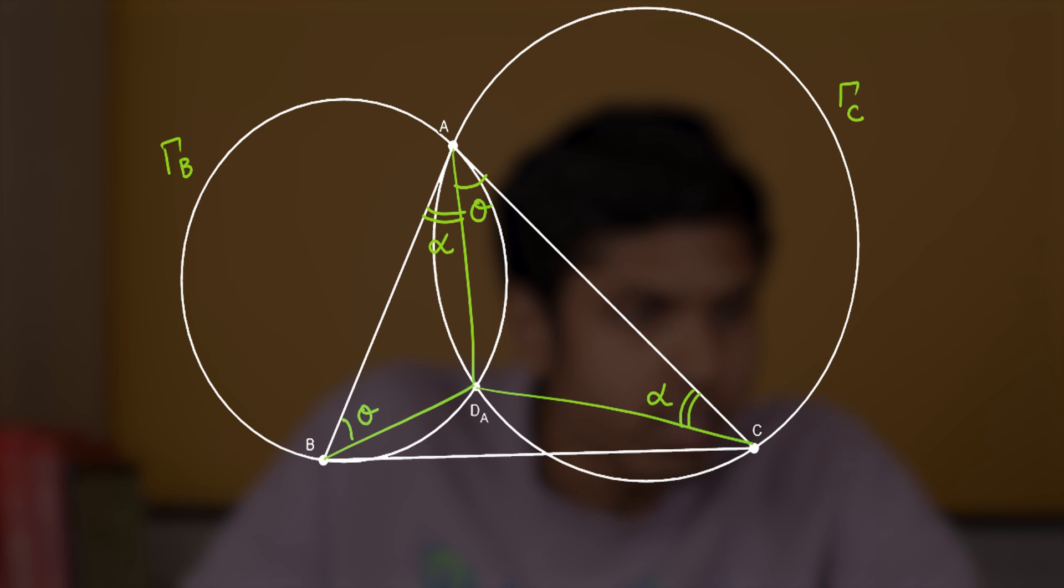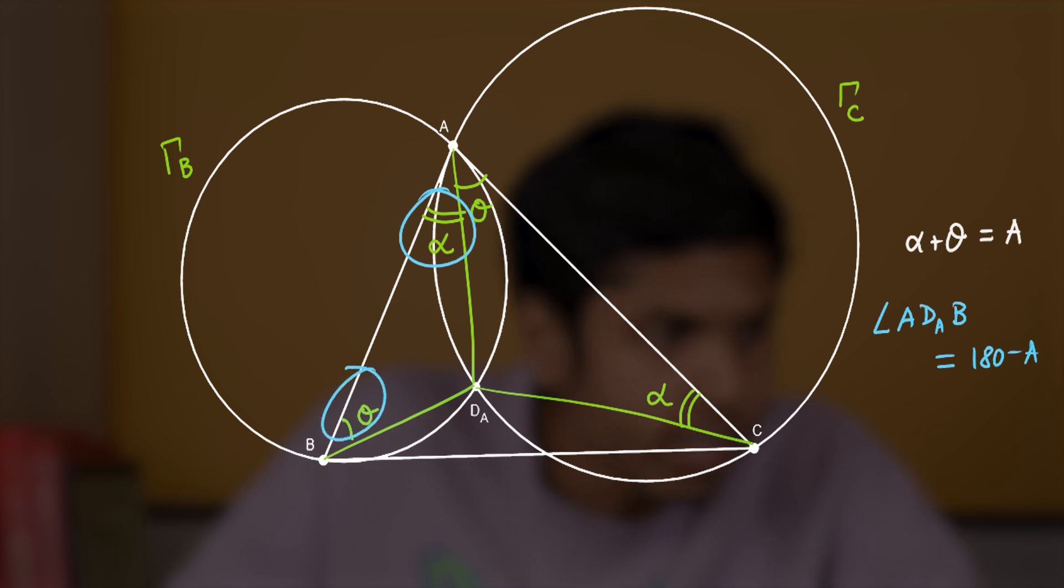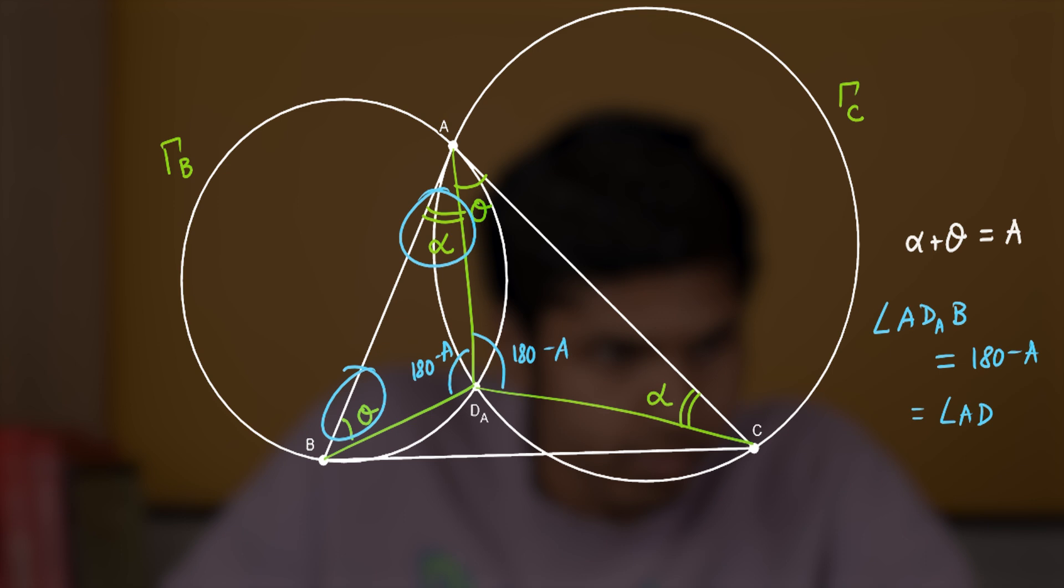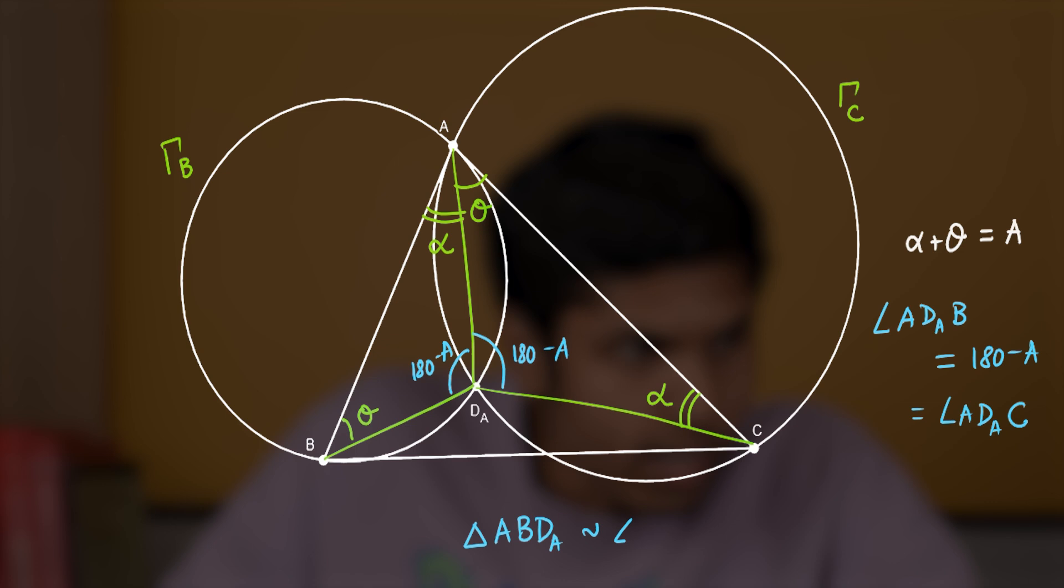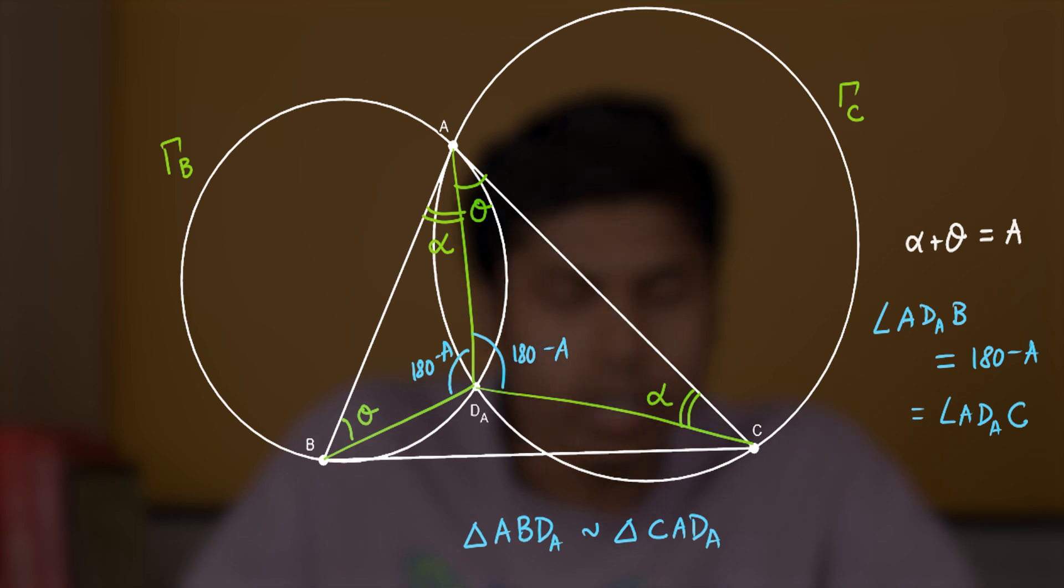All right, notice here that alpha plus theta equals the angle A and therefore we get angle AD_A B to be 180 minus A. That is because this is alpha and theta, they add up to A, so this will be 180 minus A by angle sum property. Similarly, this angle will also be 180 minus A, angle AD_A C.